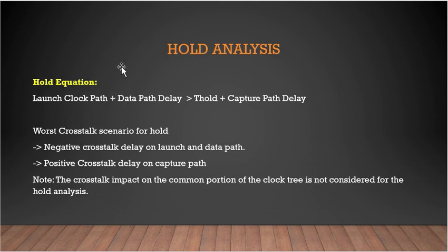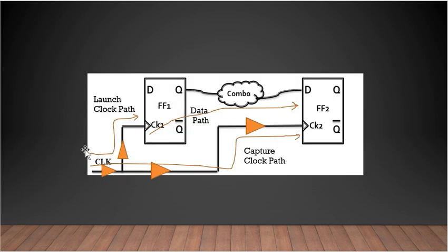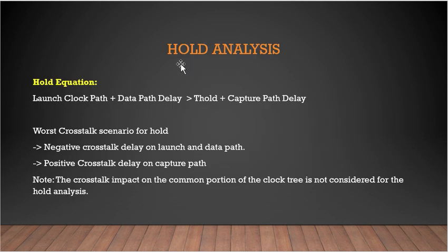Now let's see how crosstalk can affect hold analysis. The hold equation is: launch clock path delay plus data path delay should be greater than hold time plus capture clock path delay. According to this equation, the worst crosstalk scenario for hold is when a negative crosstalk delay is introduced on the launch and data path, and a positive crosstalk delay is introduced on the capture clock path. This means data will come early and will have to hold for more time — that is the worst case for hold analysis.